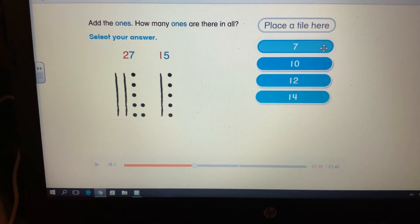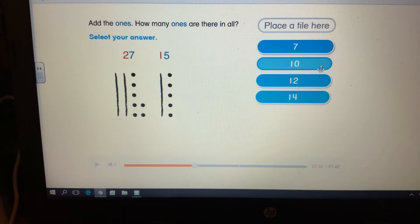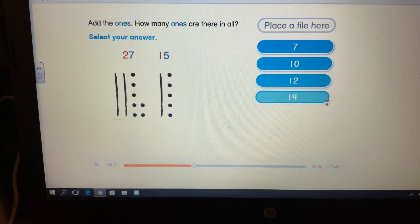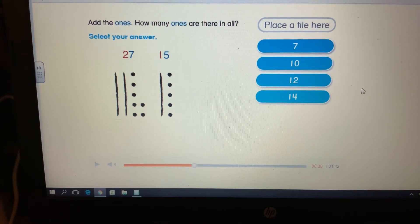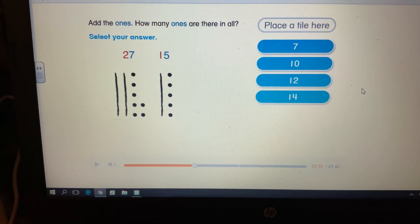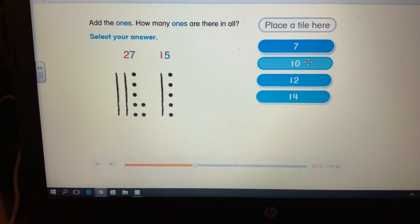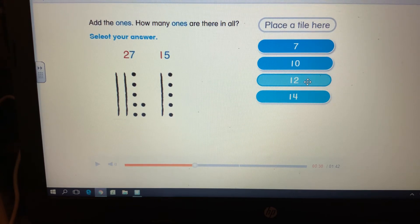Is it seven? Is it ten? Is it twelve? Or is it fourteen? Hmm, seven plus five... well, it can't be seven because I need to add a five. Seven plus three is ten, and seven plus seven is fourteen. The answer must be twelve.